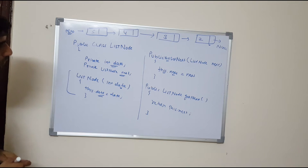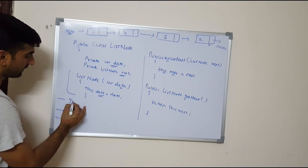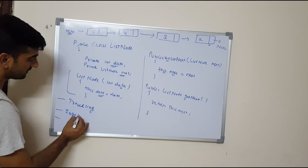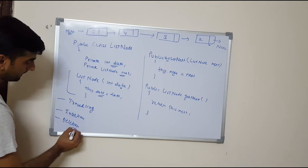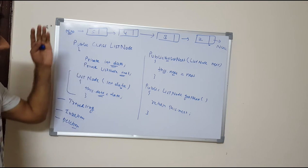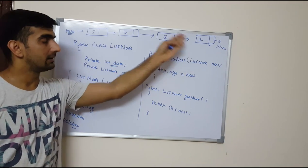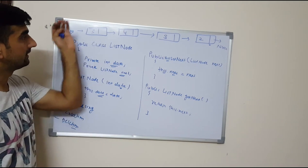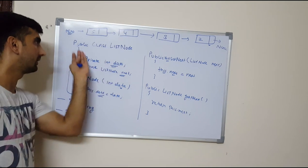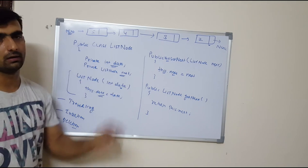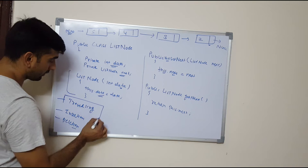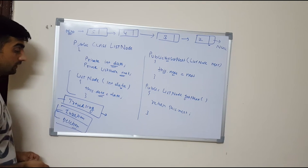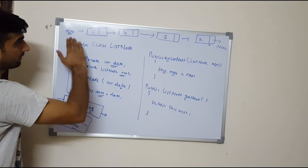On this linked list we can basically do three kinds of operations: one is traversing, the second one is insertion, and the third one is deletion. Traversing may be referred to as getting the length or getting the size of a linked list. Insertion is inserting a node at a particular position, at the beginning, or at the last. Deletion is deleting a node from the linked list. In today's video we are going to cover traversal, and in the next video we will cover insertion and deletion.